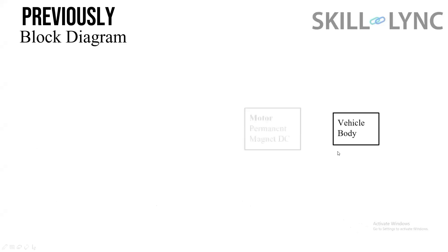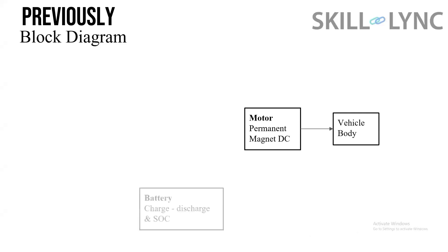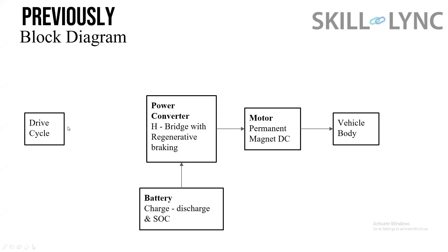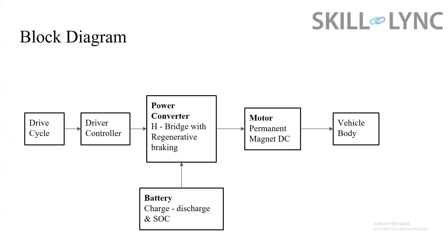First we have a vehicle body, then we'll take up a motor, and before connecting the battery directly to the motor we require a motor control. The control is made possible by a power converter. This is a drive cycle input and there is a driver controller — that's the block diagram overview.